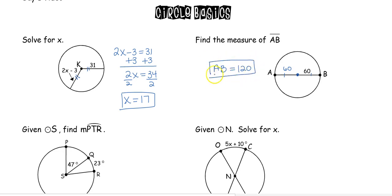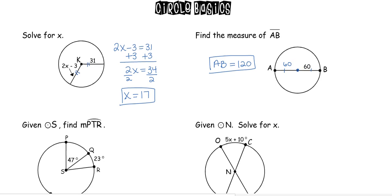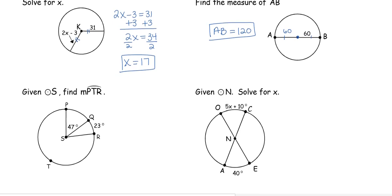This brings up a new vocabulary word: segment AB is actually a diameter. A diameter is a line on the circle that goes through the center, and it can be formed by 2 radii. It must be a straight line through the center — that cuts the circle in half. No matter where the diameter is, it always cuts the circle in half.